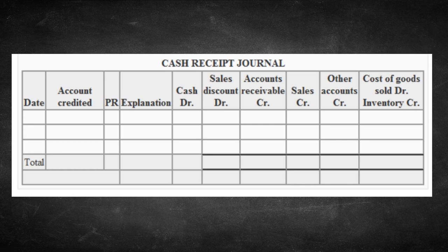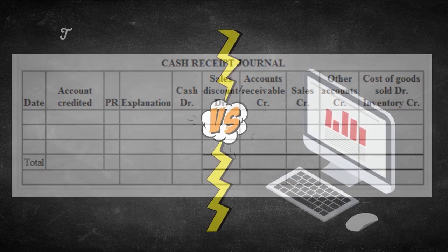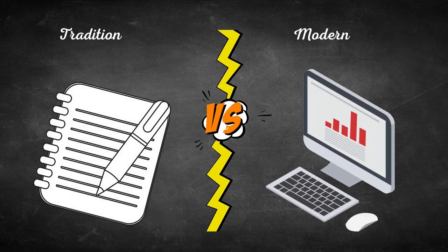In addition to the general ledger, a company may have subsidiary ledgers for accounts such as accounts receivable.